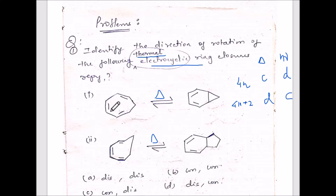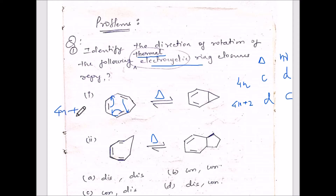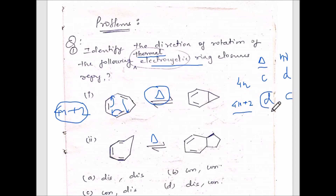Looking at the reactant and product, you can see that all the pi electrons are involved in cyclization. There are three pi bonds, so six pi electrons — this belongs to the 4n+2 system. Under thermal condition, according to the Woodward-Hoffmann rule, 4n+2 under thermal condition gives dis rotation. So the answer for the first reaction is dis rotation.